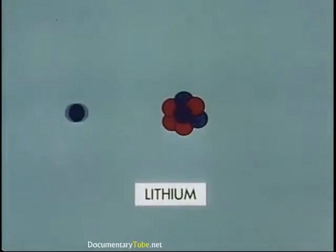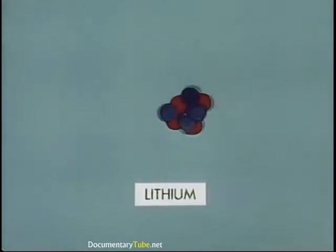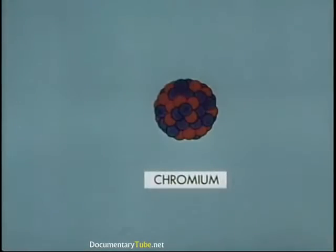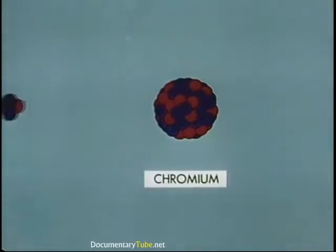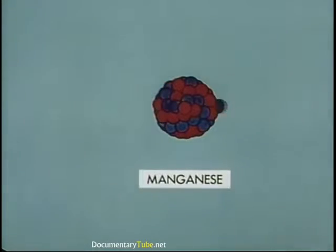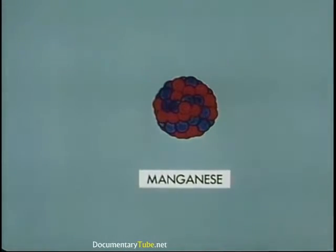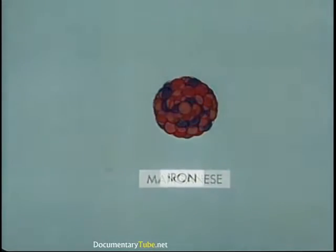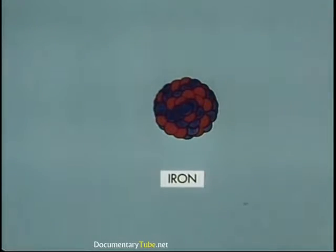He transmutes lithium into helium with a hydrogen nucleus as the projectile. By striking the nucleus of a chromium atom with a helium nucleus, he changes it into radioactive manganese with the emission of a proton. Manganese, in turn, decays to iron with the emission of a beta particle and gamma ray.